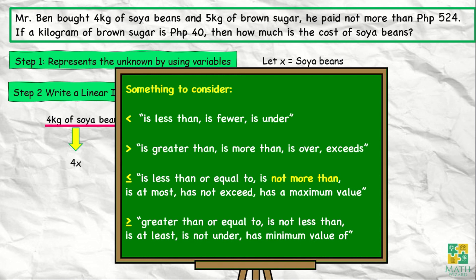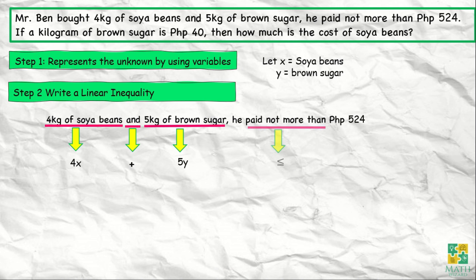Now, you'll notice the highlighted word not more than. We highlight this because our problem uses the word not more than, which means we use the inequality symbol less than or equal to. So not more than means less than or equal to 524 pesos. So we write it this way: 4x plus 5y is less than or equal to 524.